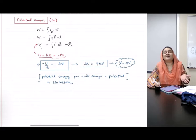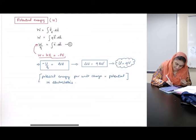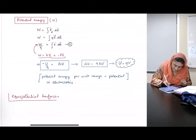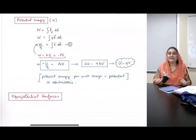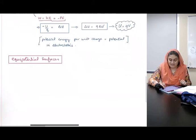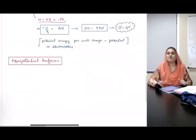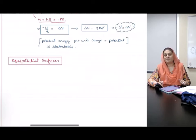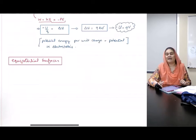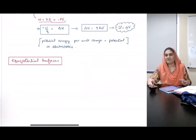Those are called equipotential surfaces. Equipotential surfaces are those surfaces on which if you move from point A to point B, you do not gain any energy or you don't lose any energy.